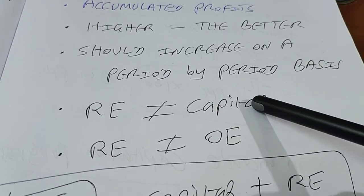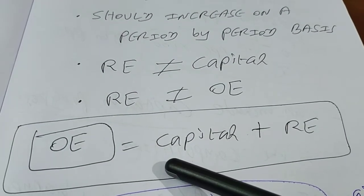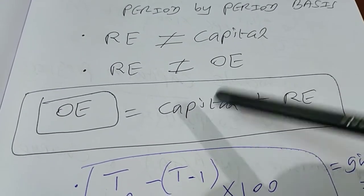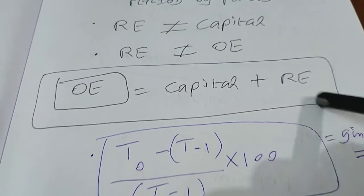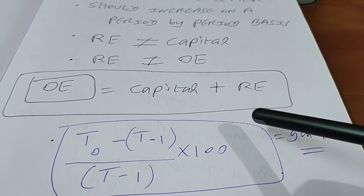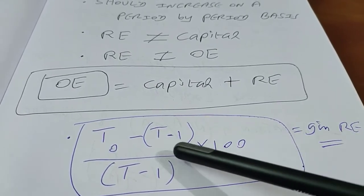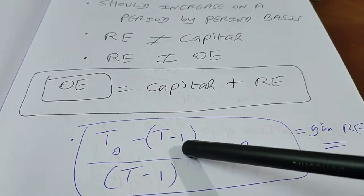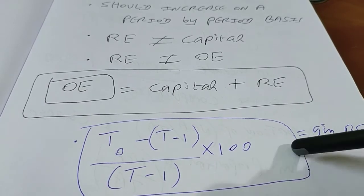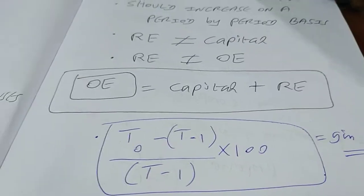Note two important equations: retained earnings is not equal to capital, and retained earnings is not equal to owner's equity. Owner's equity is the sum of capital contributed by owners plus retained earnings. Our focus here is on retained earnings. The growth rate in retained earnings is computed as: (Retained Earnings at t0 minus Retained Earnings at t-1) divided by Retained Earnings at t-1, multiplied by 100. Higher the growth rate, better is the performance.